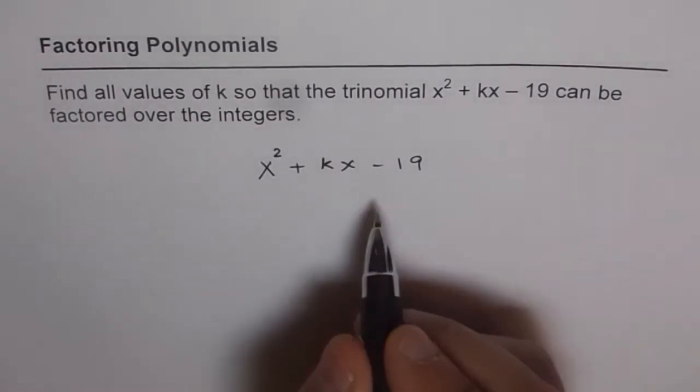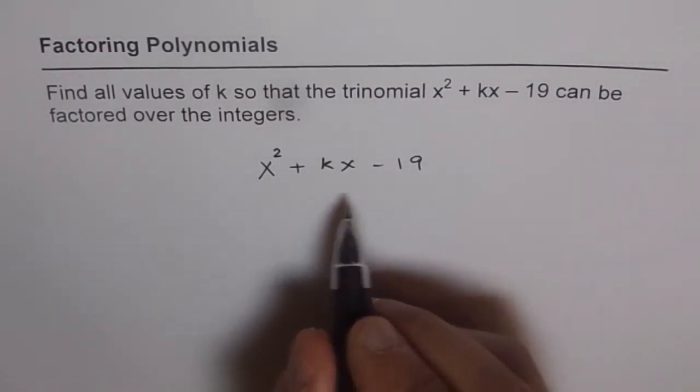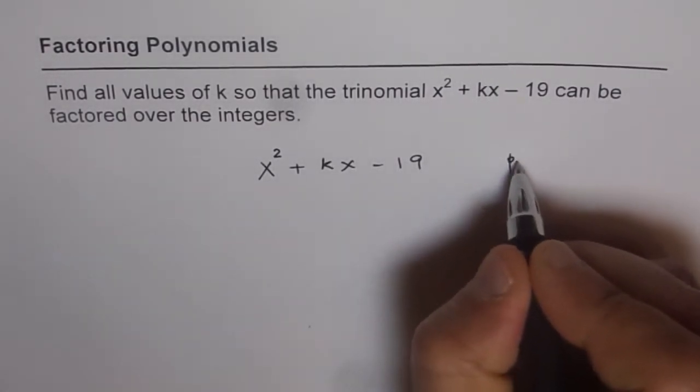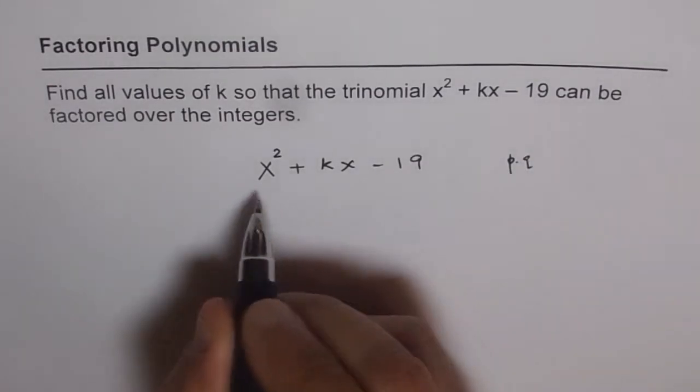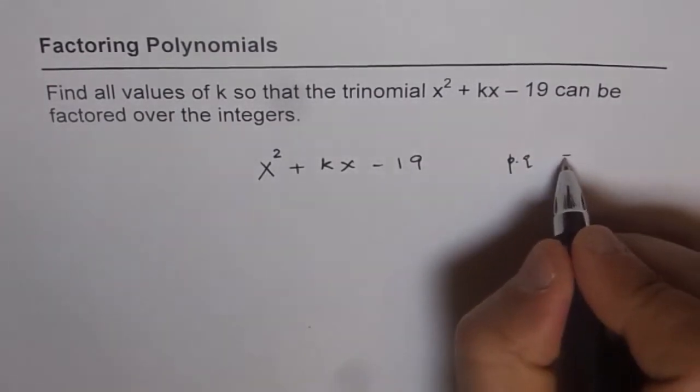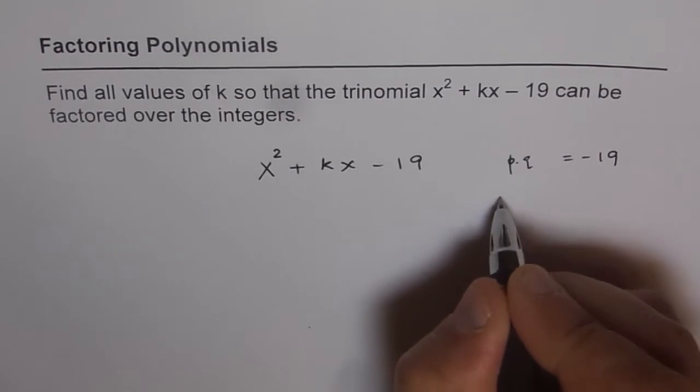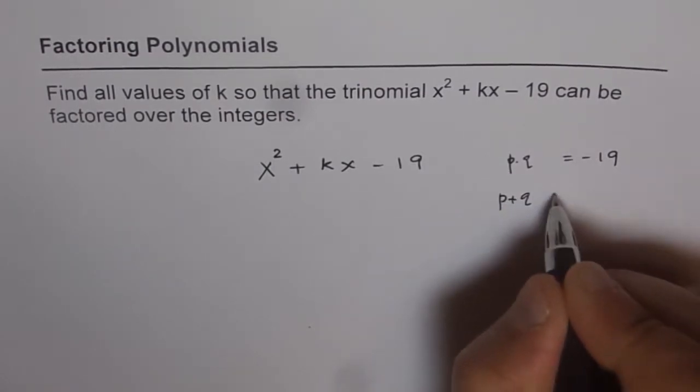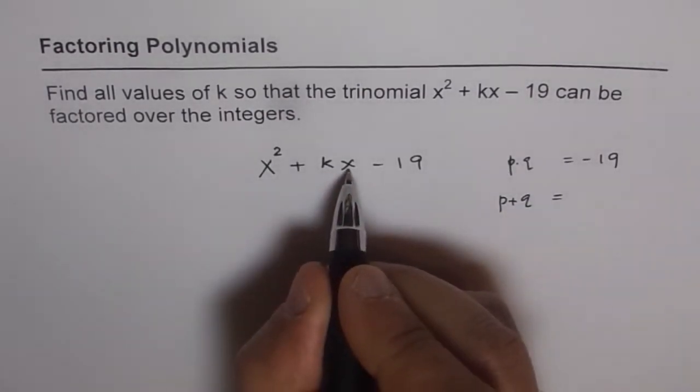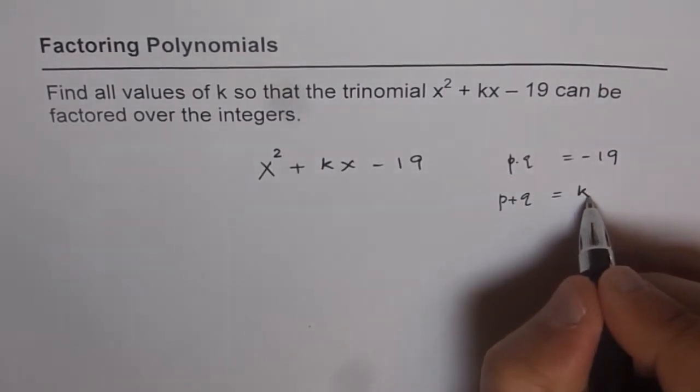In that case, what we are looking for is product of two numbers, let us say p and q, which should be minus 19. And the sum of p and q should be equals to the coefficient of x, which is k in this case.